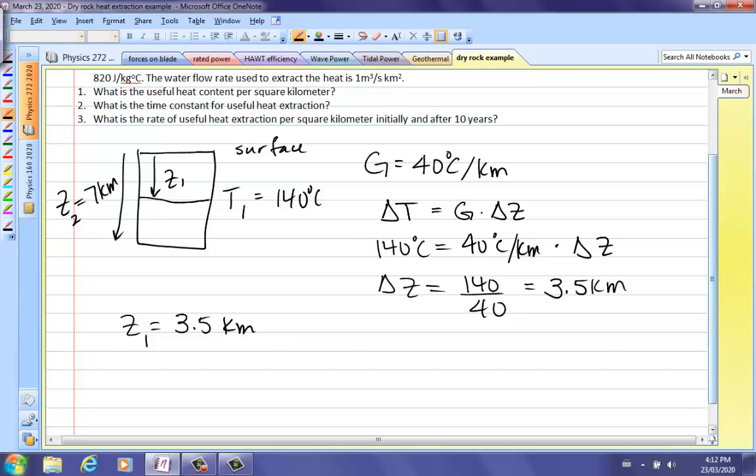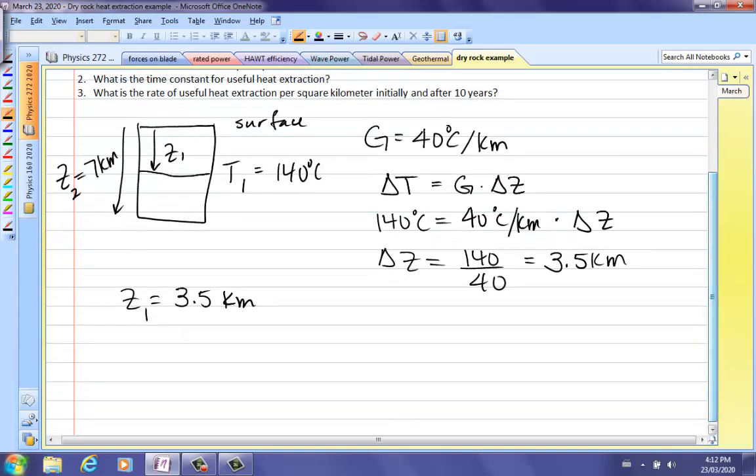So we're extracting heat between 3.5 and 7 kilometers. Question 1, what is the useful heat content here? Useful heat content per square kilometer. I gave you E0, if we want per square kilometer, we take the area over to the left, so that's per area. It's density of the rock, specific heat capacity of the rock, temperature gradient, difference in depth where we're extracting the heat, squared, divided by 2.